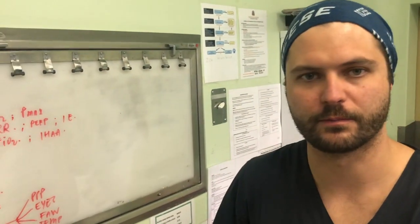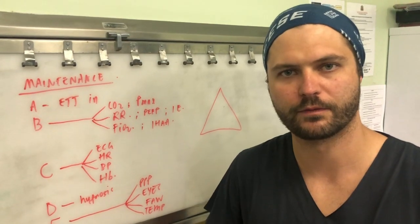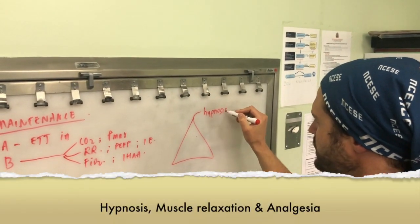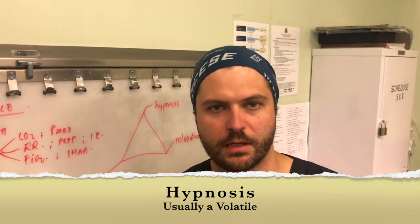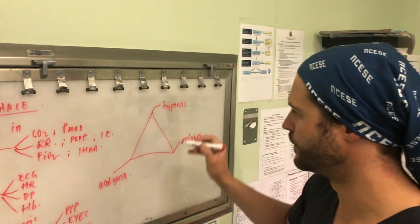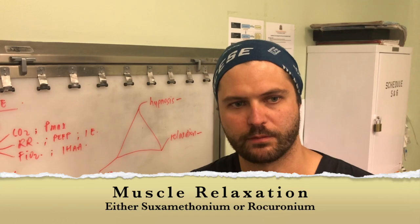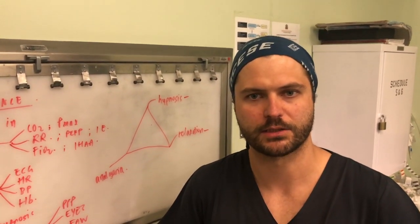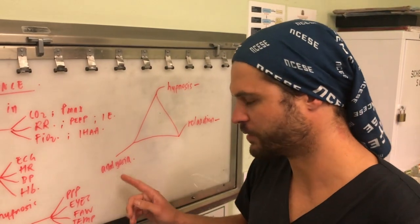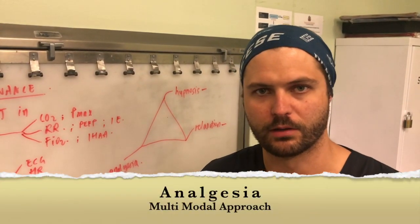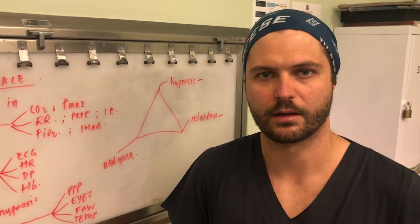Part of the maintenance phase after ABCDE is to think of the triad of anesthesia: hypnosis, muscle relaxation, and analgesia. For hypnosis in a basic GA, use volatile anesthetic. For muscle relaxation, if you used suxamethonium for induction — for example in a caesarean section — you may need to top up with a non-depolarizing relaxant such as rocuronium. For analgesia, use a multi-modal approach using analgesics from different classes such as opioids, non-steroidals, and ketamine.